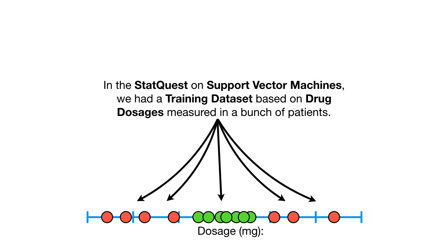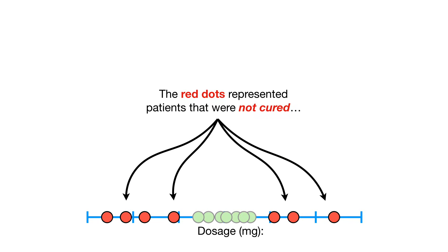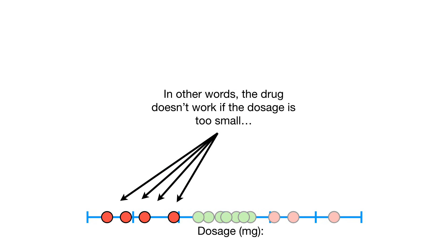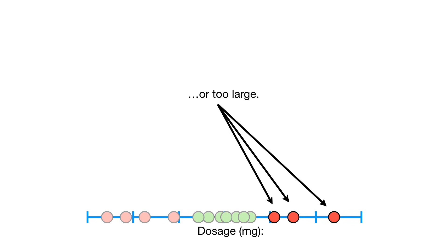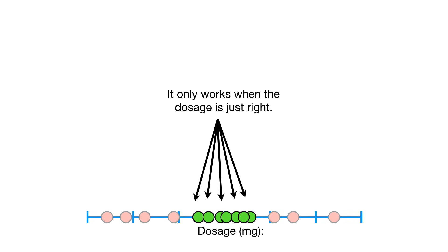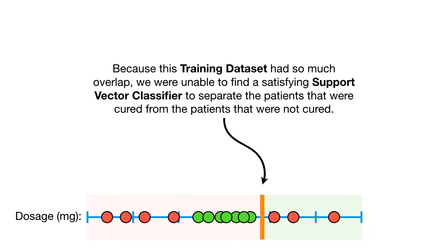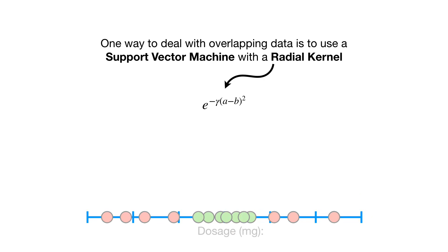In the StatQuest on Support Vector Machines, we had a training dataset based on drug dosages measured in a bunch of patients. The red dots represented patients that were not cured, and the green dots represented patients that were cured. In other words, the drug doesn't work if the dosage is too small or too large — it only works when the dosage is just right. Because this training dataset had so much overlap, we were unable to find a satisfying Support Vector classifier to separate the patients. One way to deal with overlapping data is to use a Support Vector Machine with a radial kernel, aka the radial basis function, RBF.